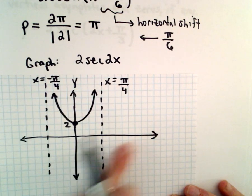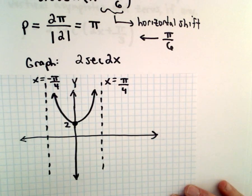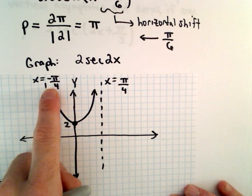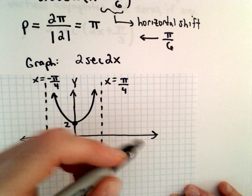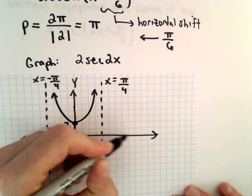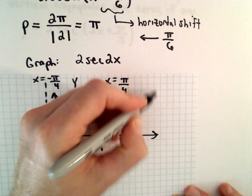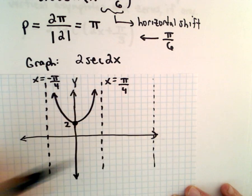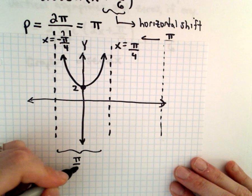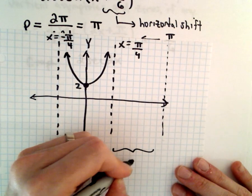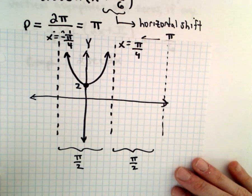We'll need the portion where it's opening downwards. So notice from negative pi over 4 to positive pi over 4, that's a distance of pi over 2. So to get another asymptote, I'm going to go over another pi over 2 units to get my next asymptote.